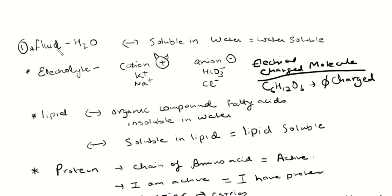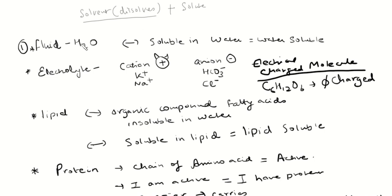Fluid is a solvent, and that's what dissolves something, which is called a solute. So a solute is something that is dissolved, and a solvent is something that it's dissolved in. For our body, one of the big solvents is water, H2O. Compounds that are soluble in water are water-soluble compounds.